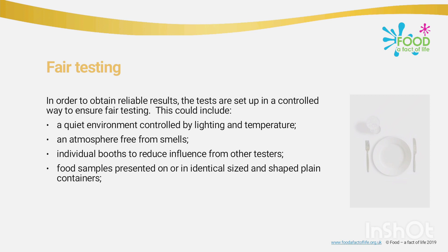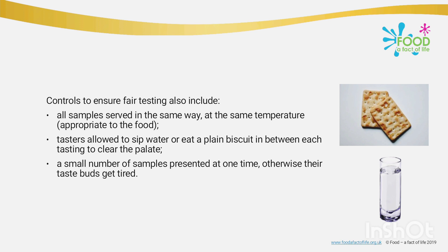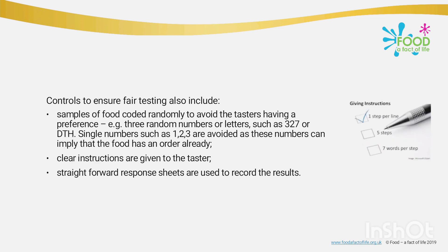For fair testing, in order to obtain reliable results, tests are set up in a controlled way. This includes: a quiet environment with controlled lighting and temperature, an atmosphere free from smells, individual booths to reduce influence from other testers, food samples presented in identical-sized plain containers, all samples served in the same way at the same temperature, and testers allowed to sip water or eat a plain biscuit between each tasting to clear the palate.